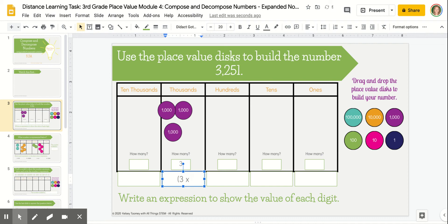For this example, I have three groups of 1,000. This expression represents the value of the three in my number.